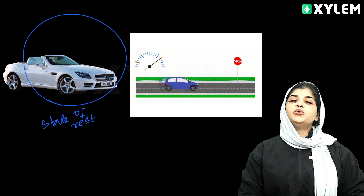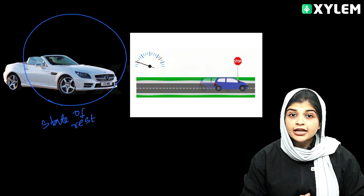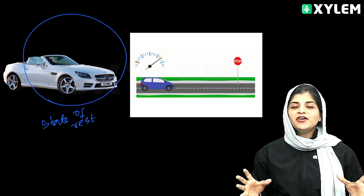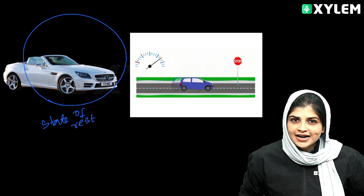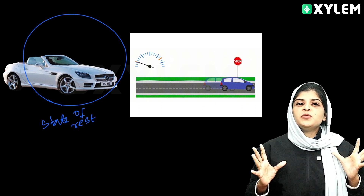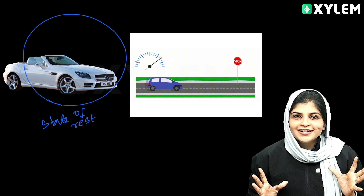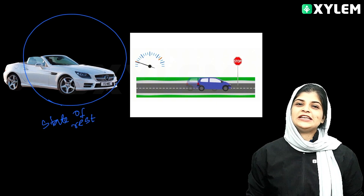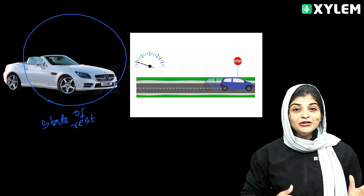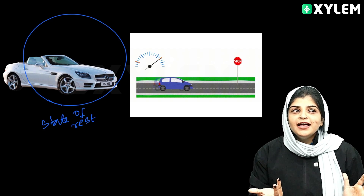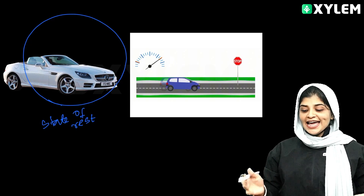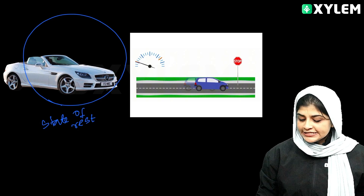There is a specific case called state of uniform motion. Uniform motion means moving at constant velocity — it covers equal distance in equal intervals of time.